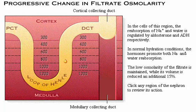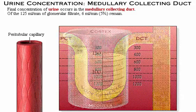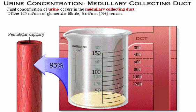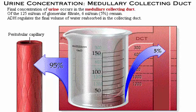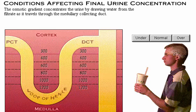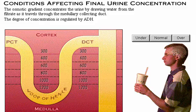The last step in the formation of urine occurs as the filtrate passes down the medullary collecting duct. Of the 125 milliliters per minute of filtrate that entered the proximal convoluted tubule from the glomerular capsule, 95% has been reabsorbed back into the blood. Only about 6 milliliters per minute, or 5%, remains to enter the medullary collecting duct. Antidiuretic hormone regulates the final amount of water reabsorbed in the collecting duct and thus determines the final concentration of urine. The medullary osmotic gradient provides the necessary environment for this final concentration, and the degree of concentration is regulated by ADH, which controls the water permeability of the duct.